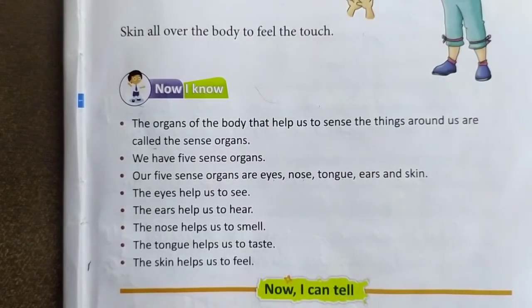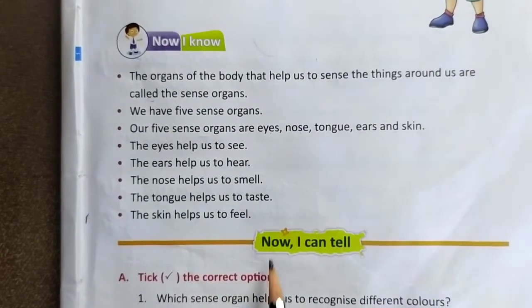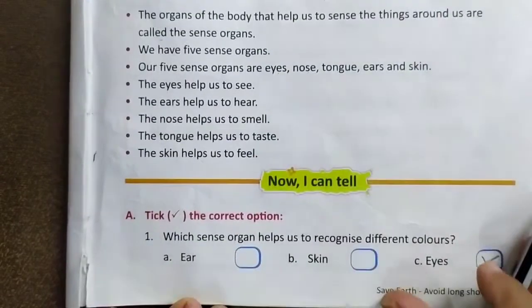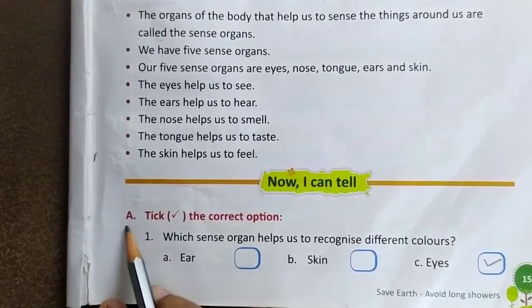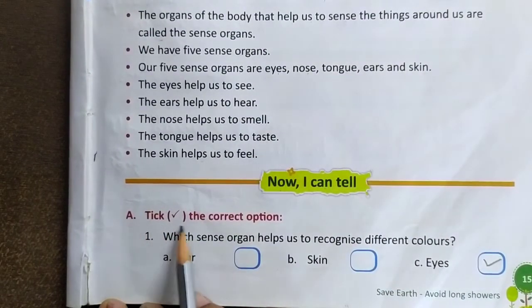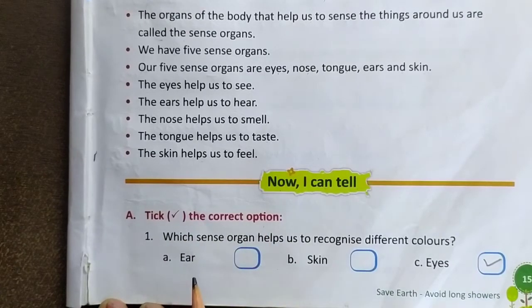Ab hum exercise karenge. Now I can tell — first question kya hai. Hamara A number ka — tick the correct option. Aapko tick karna hai correct option.